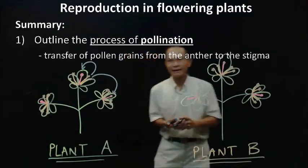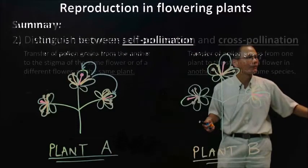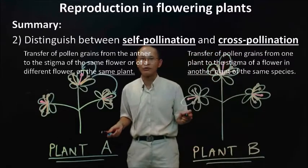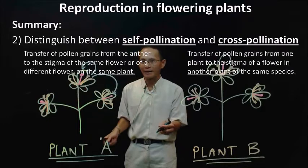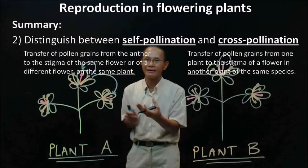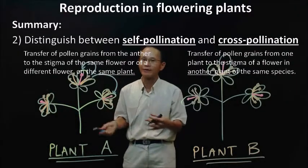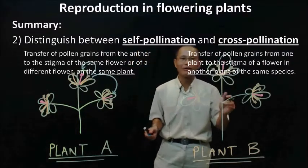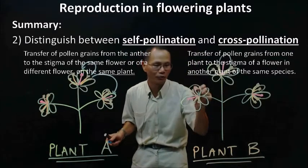Alright, now let us take a closer look at the difference between self-pollination and cross-pollination. Self-pollination is as illustrated in plant A, where the pollen grains are transferred within the same plant, or between different flowers on the same plant.